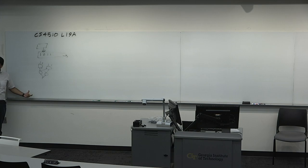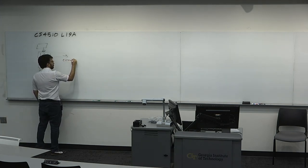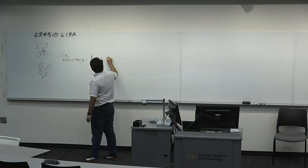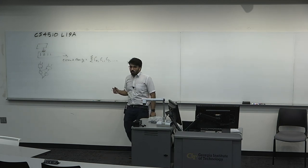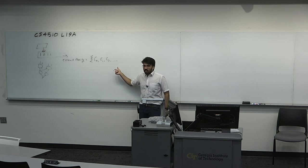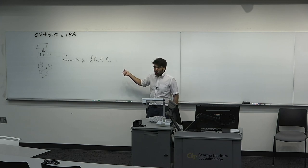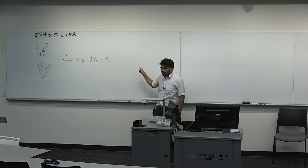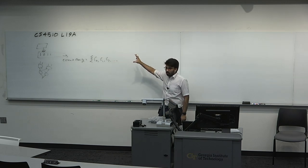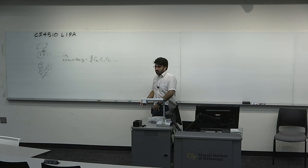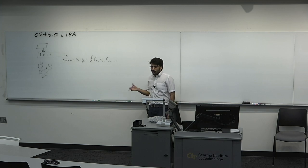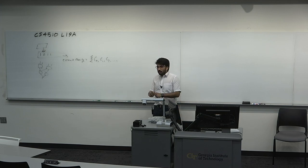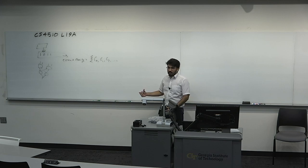What we do is define, instead of a fixed circuit, a circuit family. A circuit family is a sequence of circuits C0, C1, C2, … such that if you have an input of a specific length, you get to choose the circuit of that size and run it. This gives us the ability to accept arbitrary inputs because we now have an infinite list of circuits. A circuit family is explicitly non-uniform, while a Turing machine is uniform.